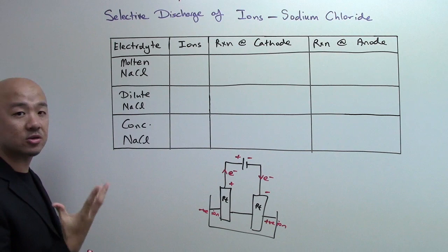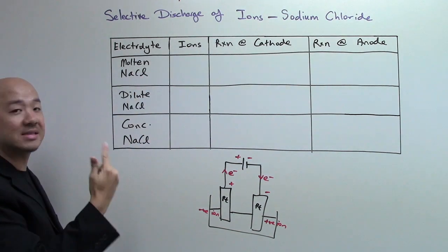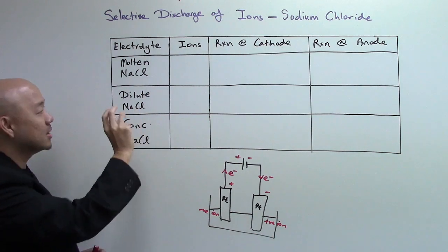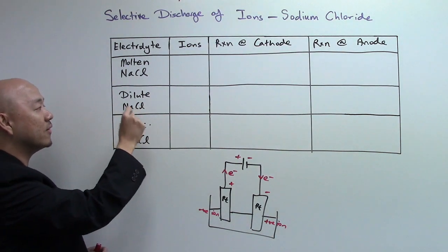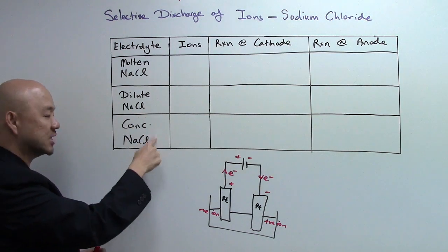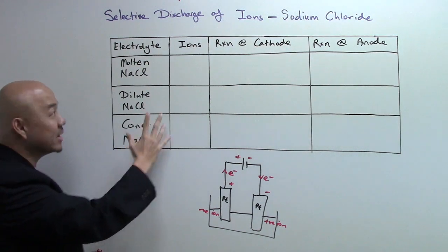Now sodium chloride in the form of electrolyte can exist in three forms. Molten sodium chloride, so it's NaCl liquid state, dilute NaCl, aqueous solution, but it's dilute. So you have more of the water, less of the solute called sodium chloride. Concentrated is opposite, you have more of NaCl sodium chloride solute, less of the water.